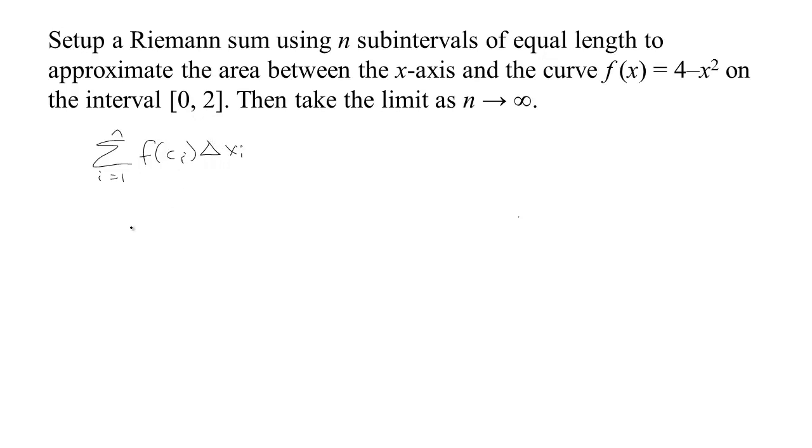We can see our interval is from 0 to 2, so the thickness is going to be the difference between the two endpoints divided by the number of sub-intervals we're going to create. So 2 minus 0 is 2 over n, meaning each sub-interval is 2 over n wide.